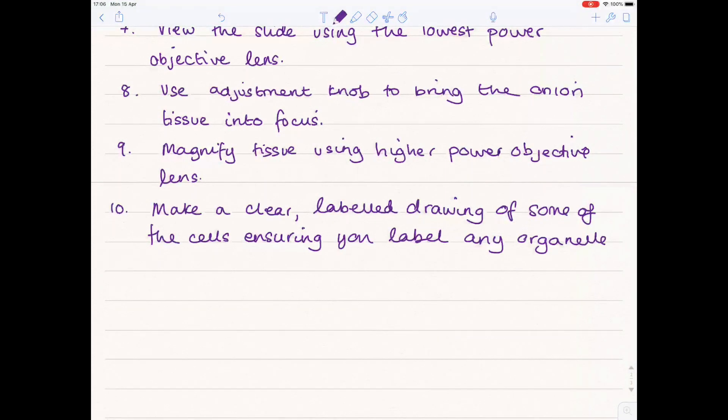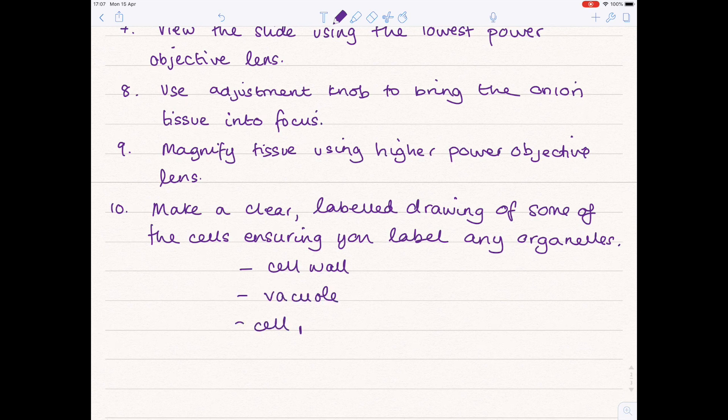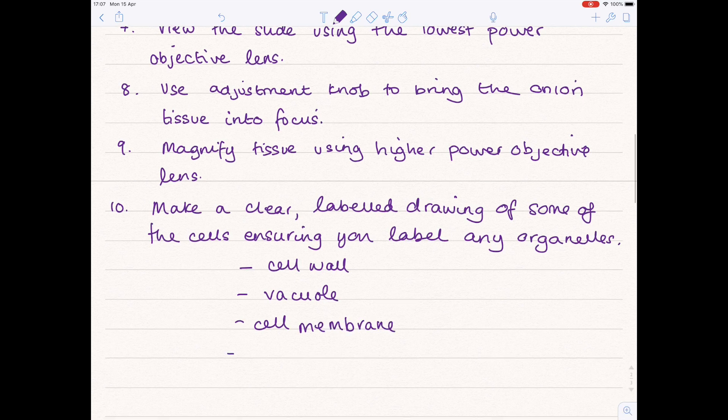You need to draw what you can see. Commonly you'll be able to see the following organelles, because an onion cell is a type of plant cell. You should be able to see a cell wall, vacuole, cell membrane, but obviously it depends on the clarity of your image. Cytoplasm. List your ordinary plant cell organelles here. And don't forget to make a note of the magnification used.